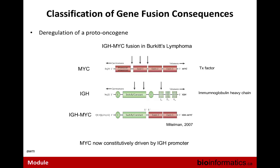Another interesting example is the IGH-MYC fusion found in Burkitt's lymphoma — another signature fusion. Here you have the MYC transcription factor and the IGH immunoglobulin heavy chain. The fusion event puts part of the MYC transcription factor under different regulatory control. The enhancers and promoters driving IGH now drive MYC. There's really not much of a fusion protein, if any — it's mostly just a regulatory change. You find a huge diversity of these things, with fragments of genes inserting into the IGH region, inducing expression that drives cancer.